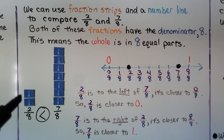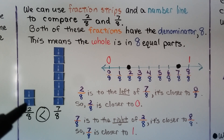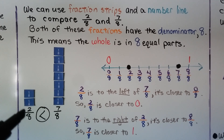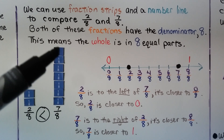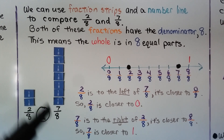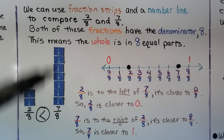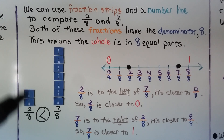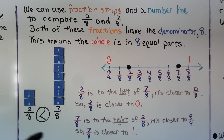Using the fraction strips we can see the difference — we can compare them. Here we have 2 one-eighth pieces, that's 2 eighths. And here we have 7 one-eighth pieces, that's 7 eighths. We can see this is much greater, and this is much less — it's smaller. 2 eighths is less than 7 eighths.